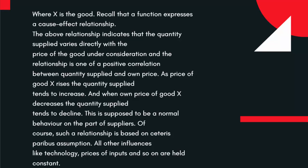As price of good X rises, the quantity supplied tends to increase. And when the own price of good X decreases, the quantity supplied tends to decline. This is supposed to be normal behavior on the part of suppliers. Of course, such a relationship is based on the Ceteris Paribus assumption — all other influences like technology, prices of inputs, and so on are held constant.